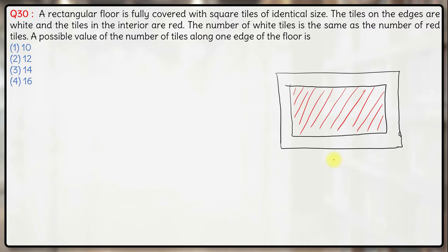So let us say the edges are x and this is y. So this part here will be y minus 2, the length of this part. If the length of this part is x, that means if there are x tiles along this edge and y tiles along this edge...